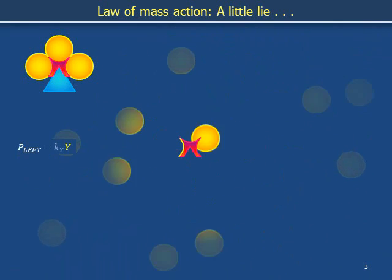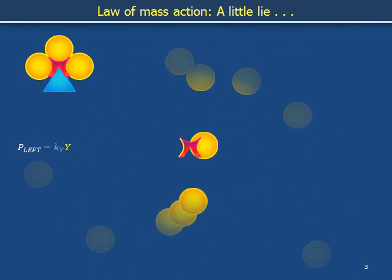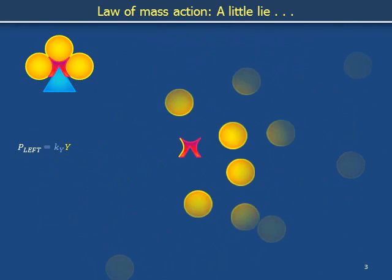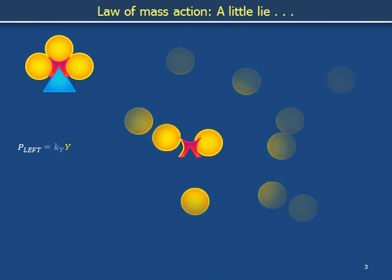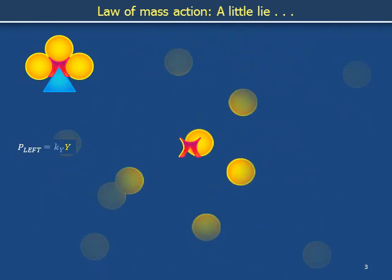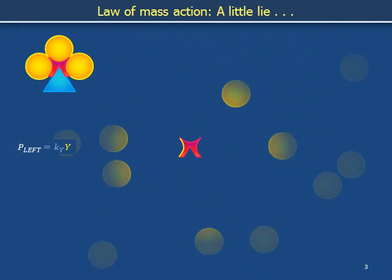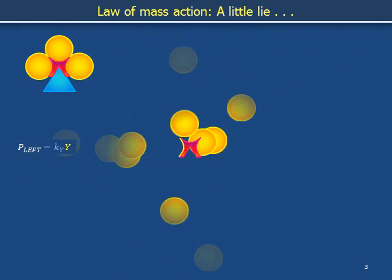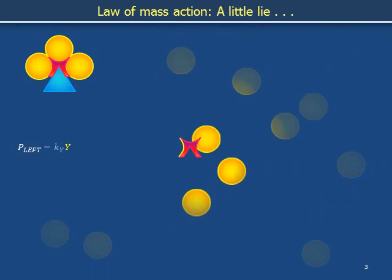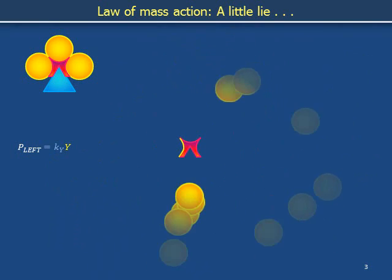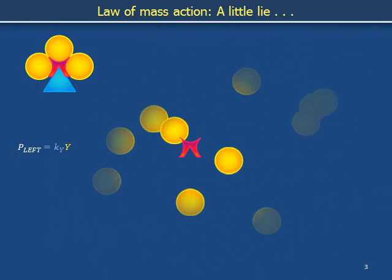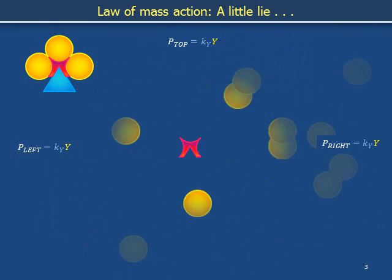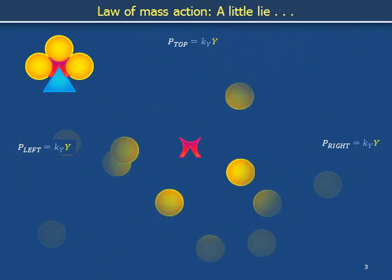If each individual circle occupies the groove for only a small fraction of time, the total fraction of time the groove is occupied is proportional to the concentration of yellow circles in the solution. The proportion of time that the left groove is occupied is p sub left, which equals a proportionality coefficient k sub y multiplied against the concentration of y — meaning the concentration of yellow circles. Analyzing the top and right grooves in the same way, we obtain equivalent expressions for the corresponding probabilities of occupation.